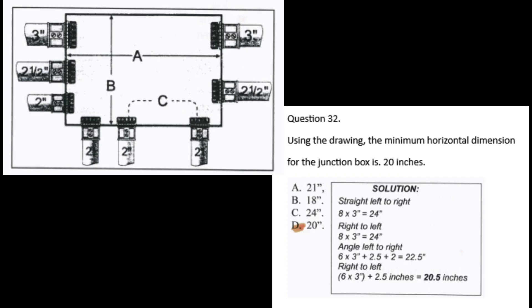Question 32, Part 1: Using the drawing, the minimum horizontal dimension for the junction box is 20 inches.